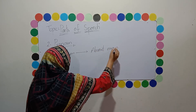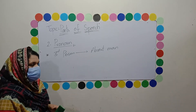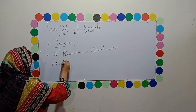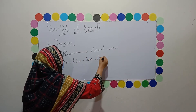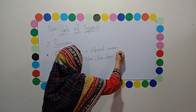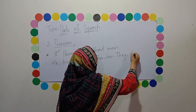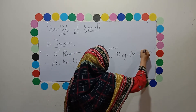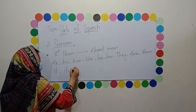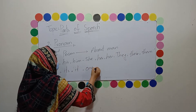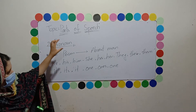Jo us waqt baat karne ke dauran ya likhne ke dauran maujood na ho, unke liye ham third person use karte hain. Third person mein ye cases aate hain: he, his, him; then she, her, her; then they, their, them; and it, its, it; and also one, ones. These are all the third person pronouns, used for the absent person.